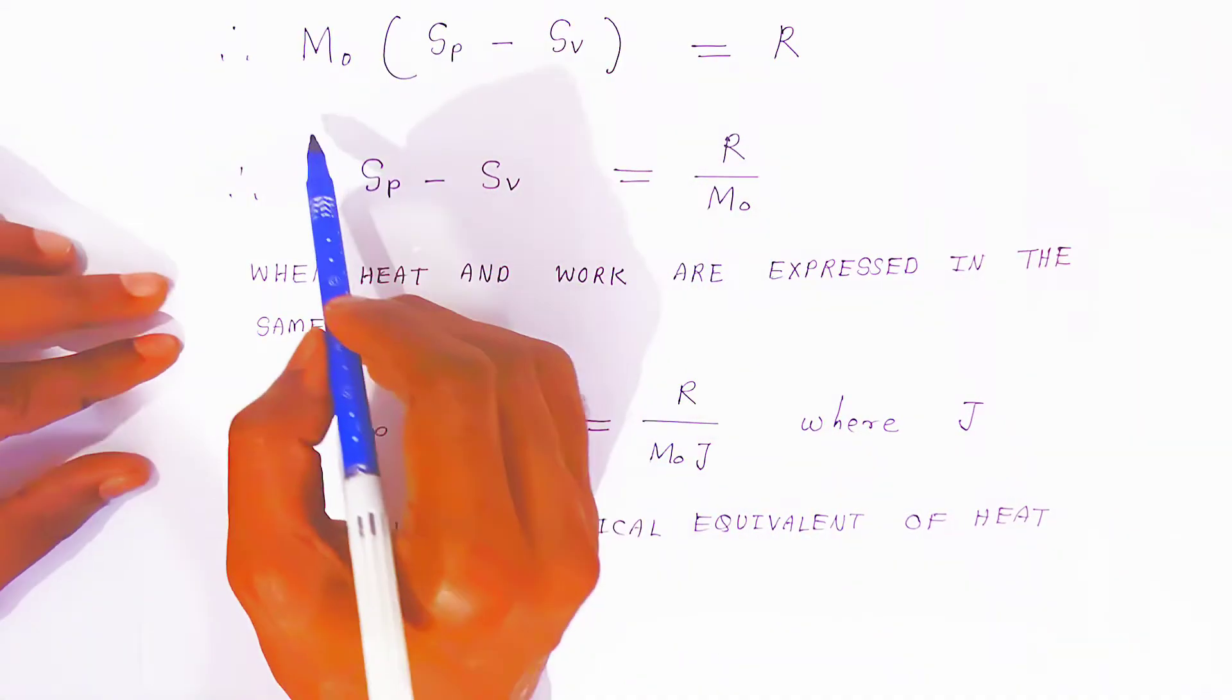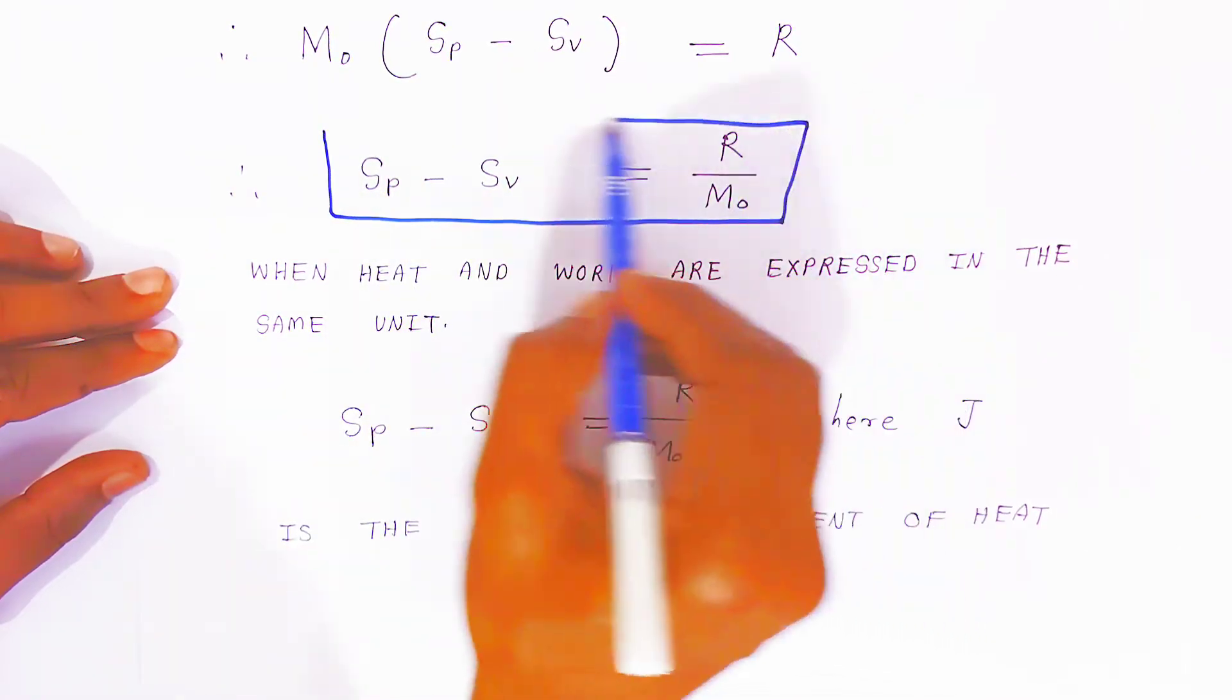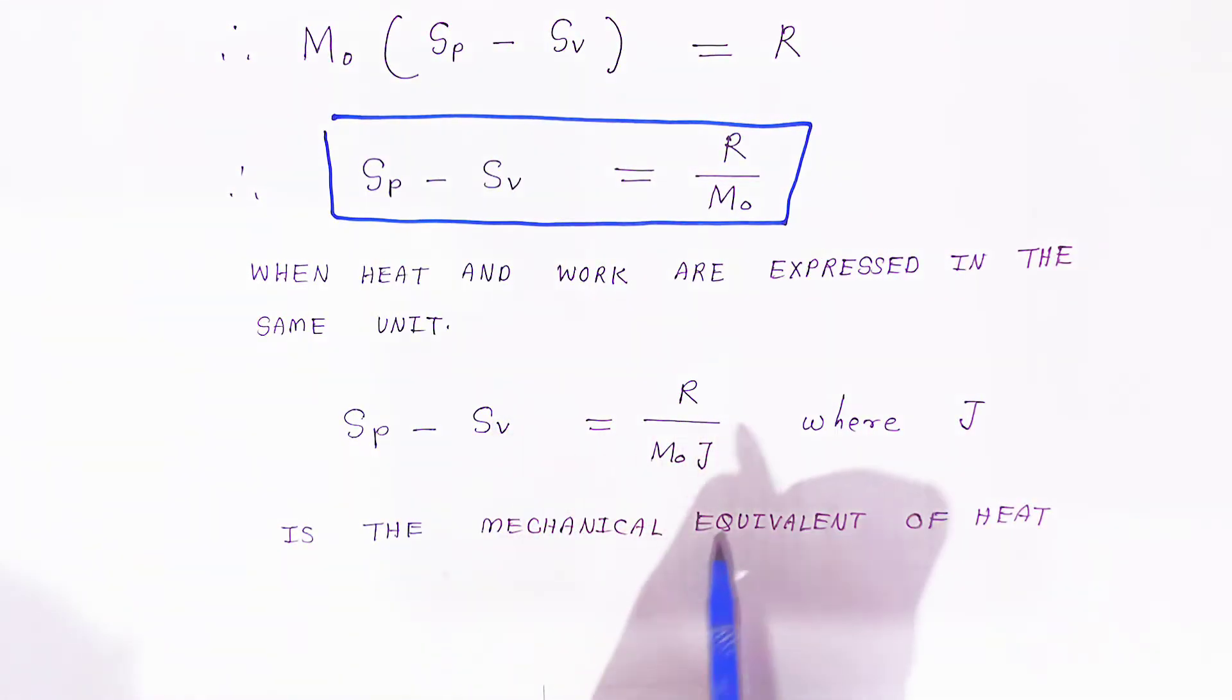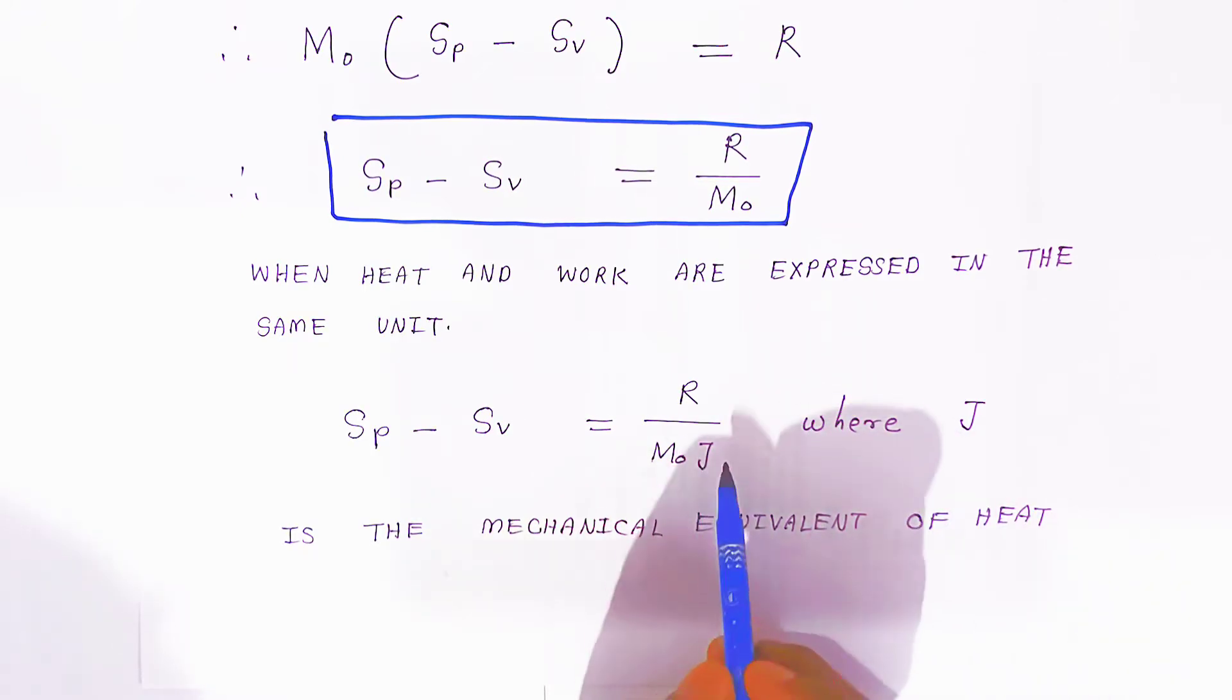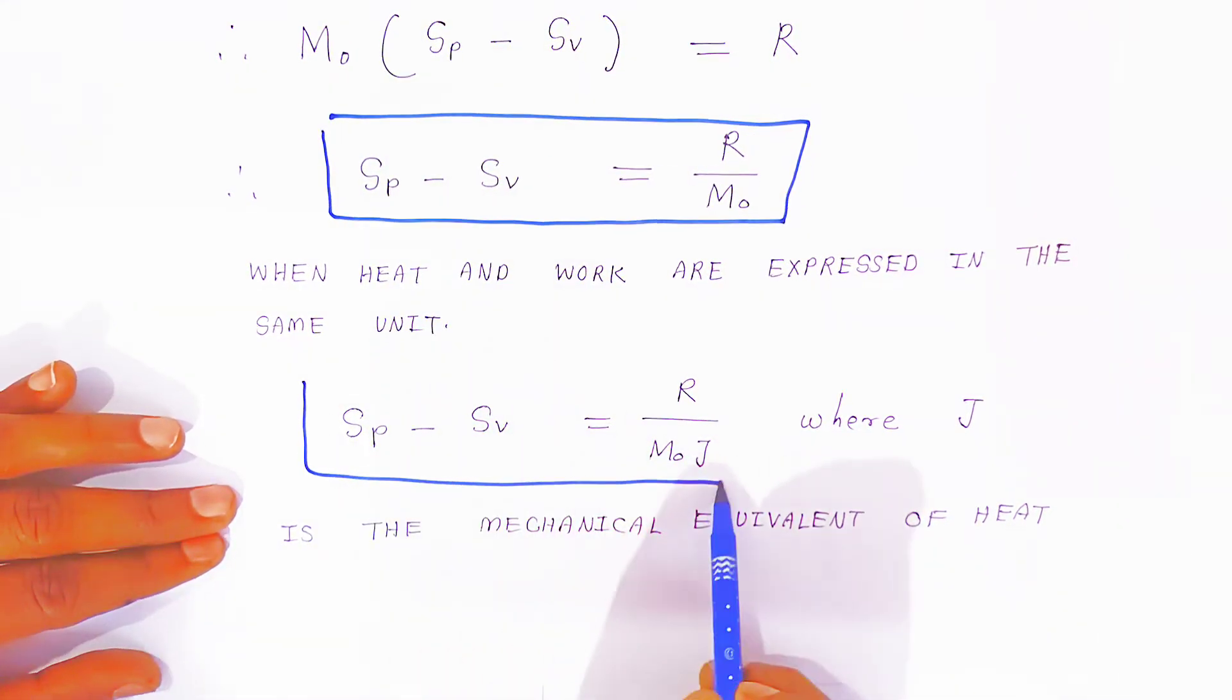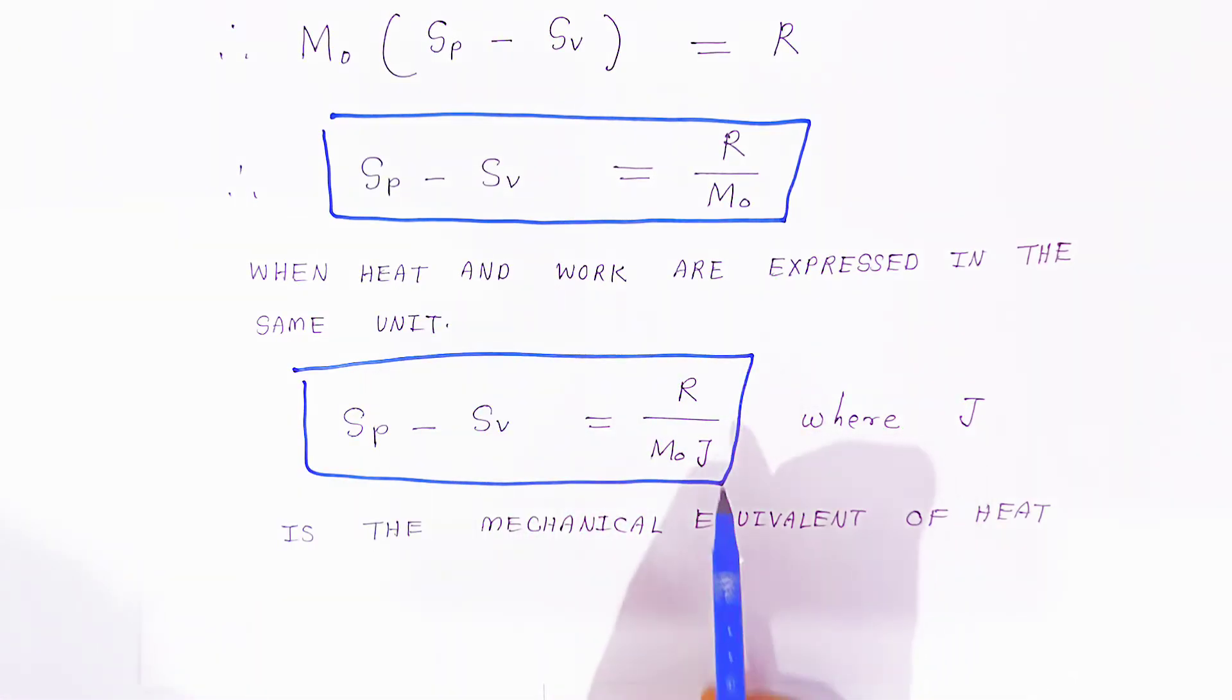When you express in the mechanical equivalent of heat, you have to put the J value. J is called the Joule, the mechanical equivalent of heat. So it's R/(M0*J), where J is the mechanical equivalent of heat. These are very important expressions for solving problems.